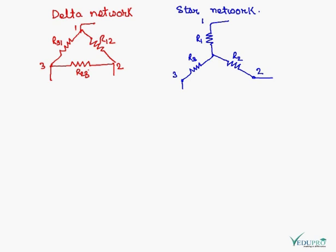There can be two forms of network: delta network and star network. If the resistance is connected in this way, it is delta network, and the resistances which are connected this way are the star network.